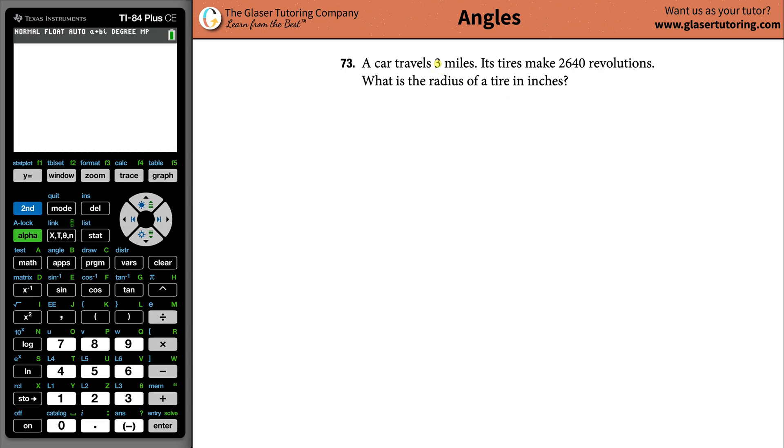Number 73, a car travels three miles. Its tires make 2,640 revolutions. What is the radius of the tire in inches?